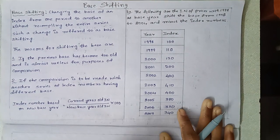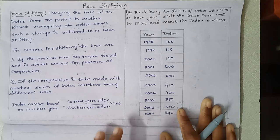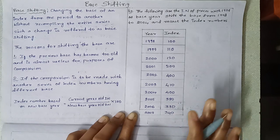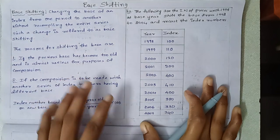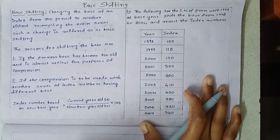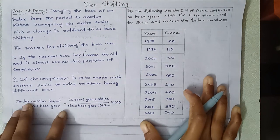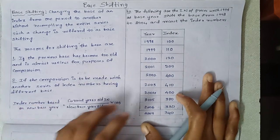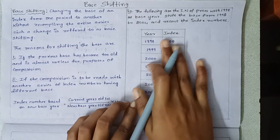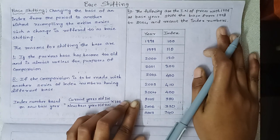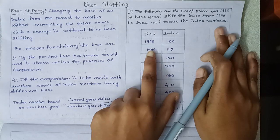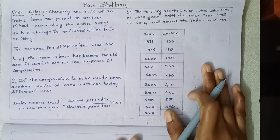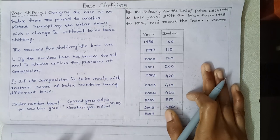If you are using the old base year, you need to change to a new base year. The next reason: if the comparison is to be made with another series of index numbers having different base years. We have one index number, this is the series. We have to compare this series with another series. If we have a different base year, we can change the base.